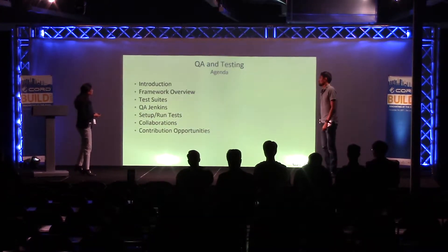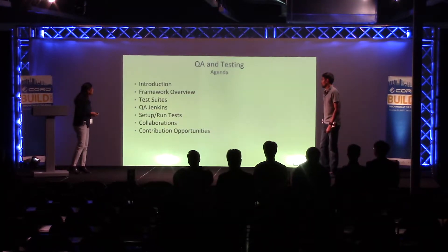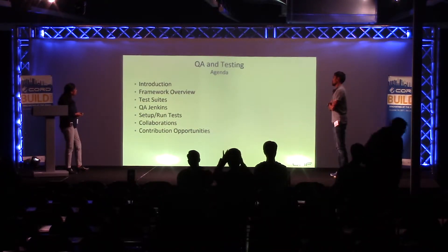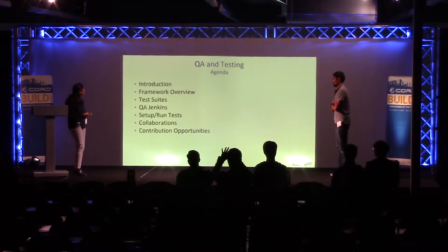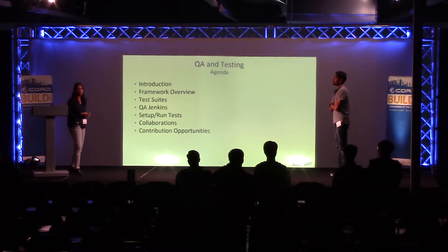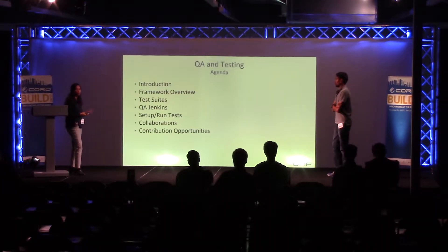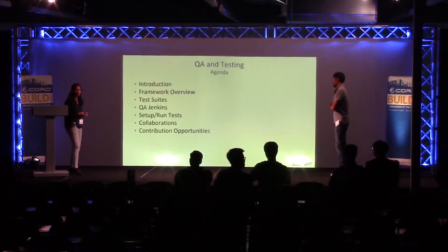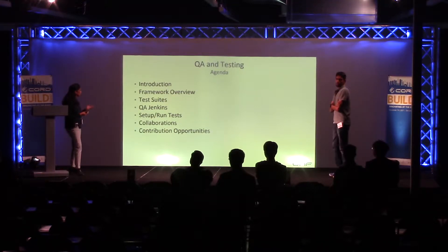A quick walkthrough of the agenda: we'll introduce the automation framework we have currently, give an overview of the framework, then go through the test suites we have built and how we run them. We use the QA Jenkins environment at ONF. Then we'll show a quick example of how to run a simple test using the automation framework, and lastly talk about current collaborations and contribution opportunities in QA.